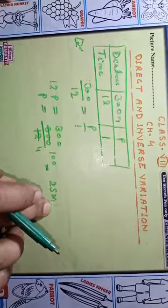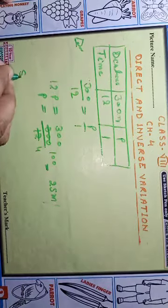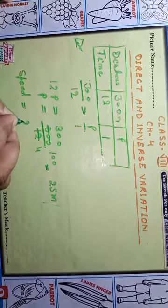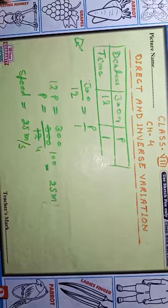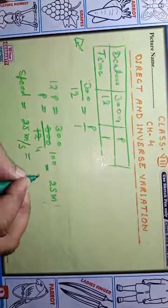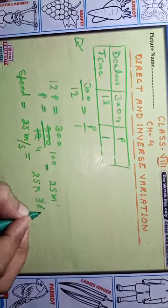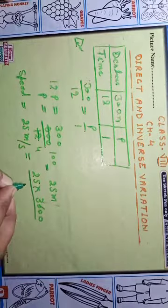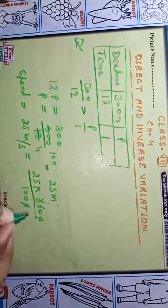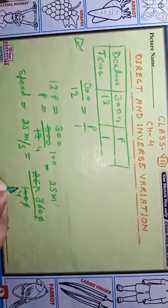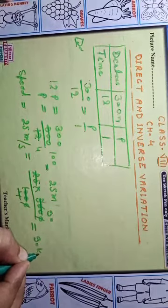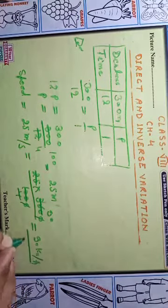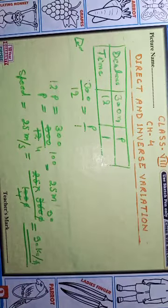In one second, the train covers 25 meters. So the speed is 25 meters per second. Now let's convert this speed to kilometers per hour: 25 multiplied by 36 divided by 1000 equals 90 kilometers per hour. The speed of the train is 90 kilometers per hour. Thank you.